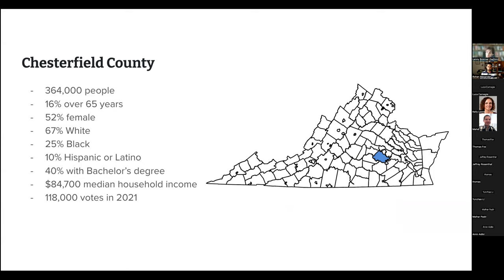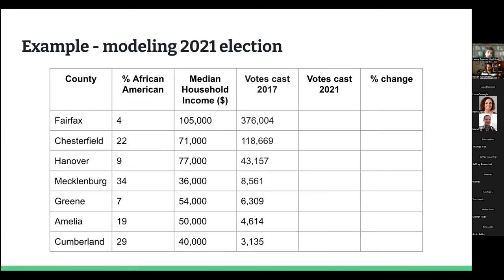Imagine there are only seven counties in this election, all in Virginia, and we're focused on Chesterfield County. We have data about Chesterfield County: population, demographics, education, household income, and the number of people that voted in 2017. There are only these seven counties, one of which is Chesterfield. We have the percentage of African-American residents, median household income, and votes cast in 2017. Imagine it's election night 2021 and votes start coming in for three of those counties.